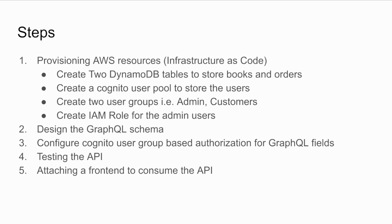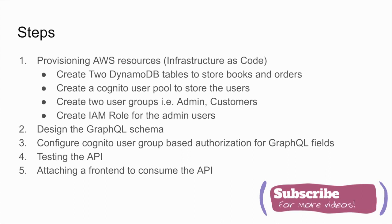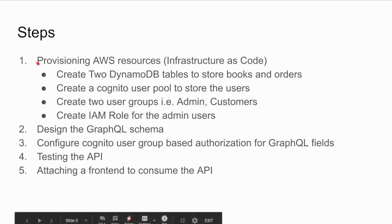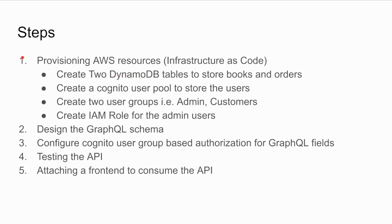Hello everyone, welcome back. This is Part 2 of building an AppSync API with the Serverless Framework series. If you are watching Part 2, I hope you have already watched Part 1 where we provisioned all the resources required for our AppSync API. If you haven't, please go watch that first — I'll put a link in the description — then come back to Part 2 where we are going to design the GraphQL schema. Let's get started.